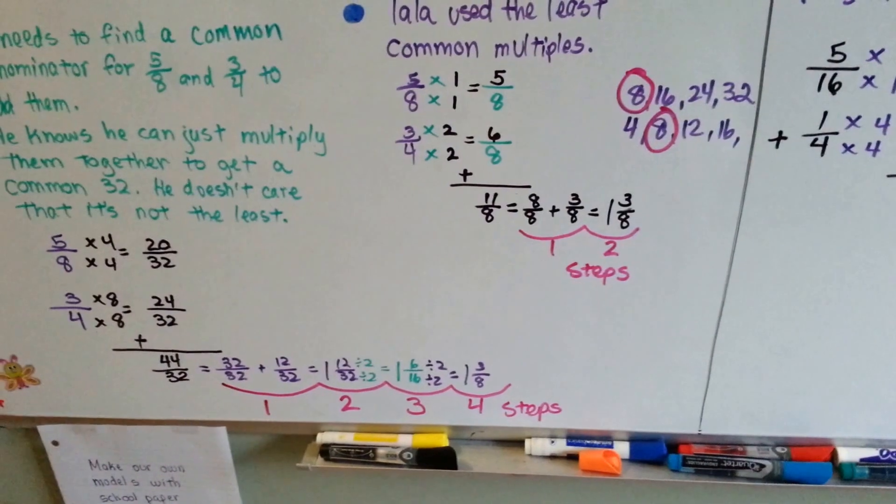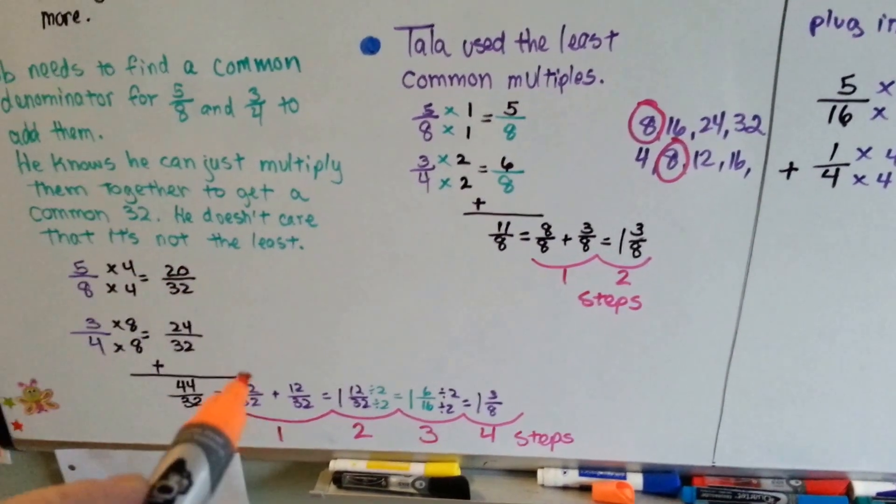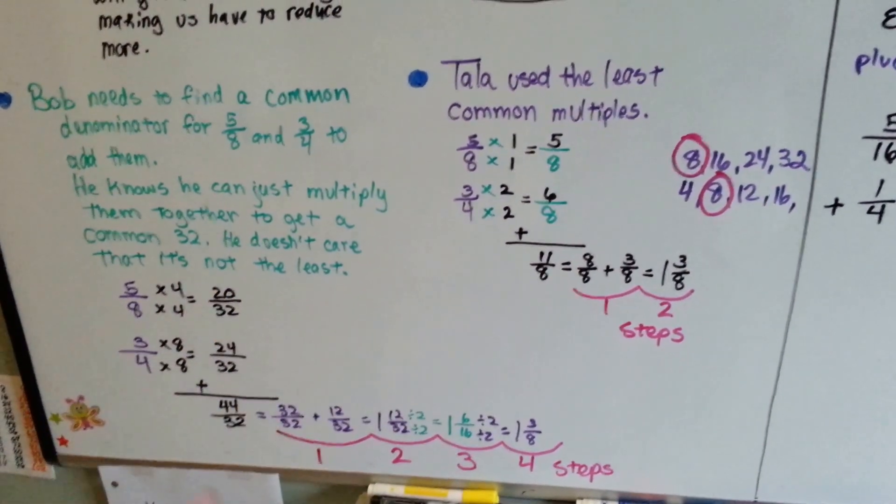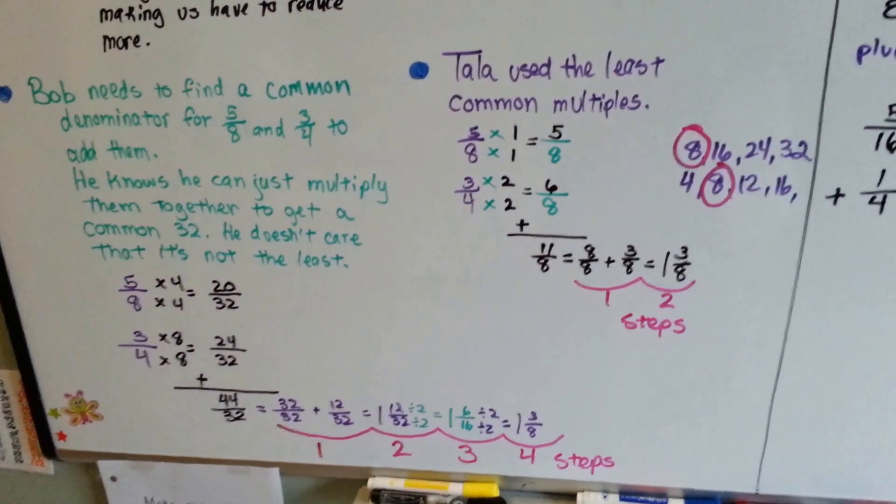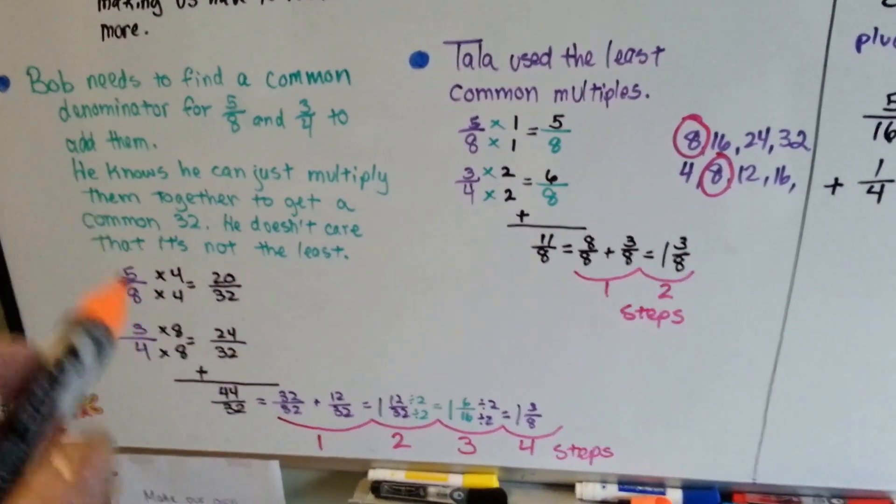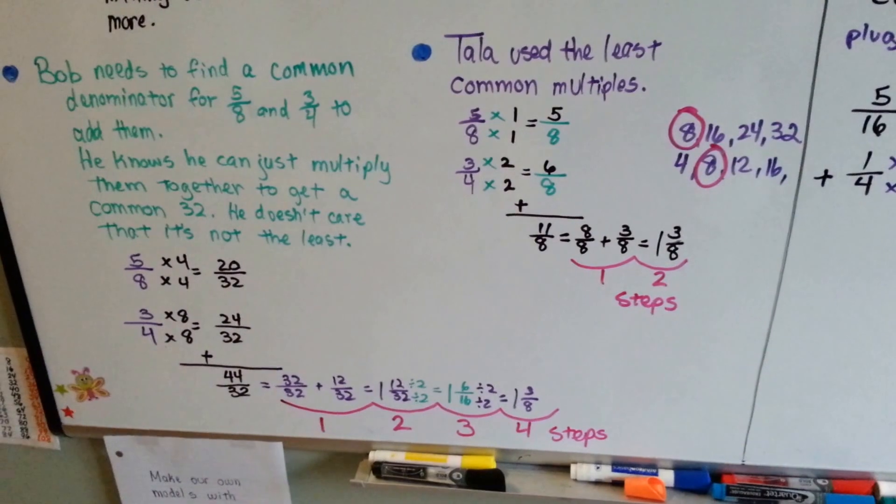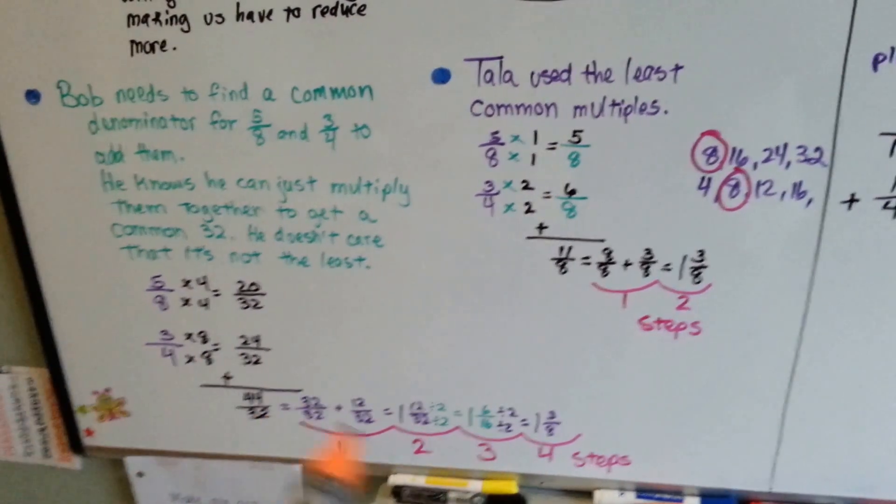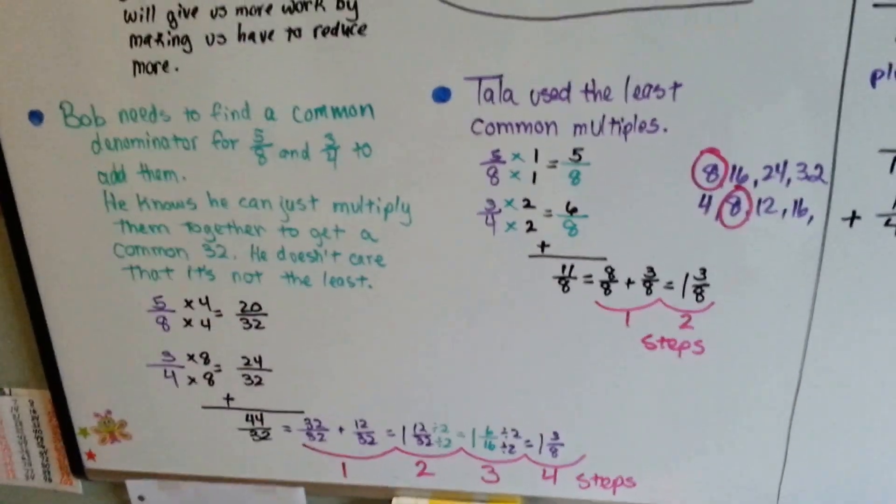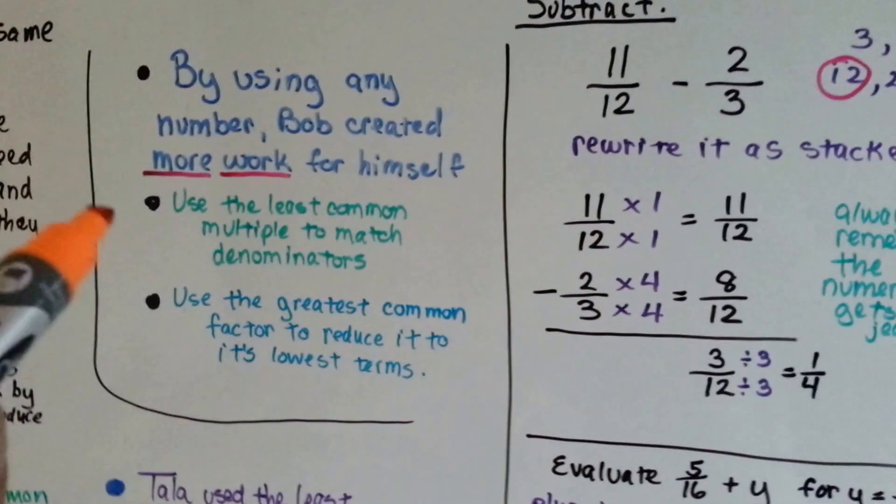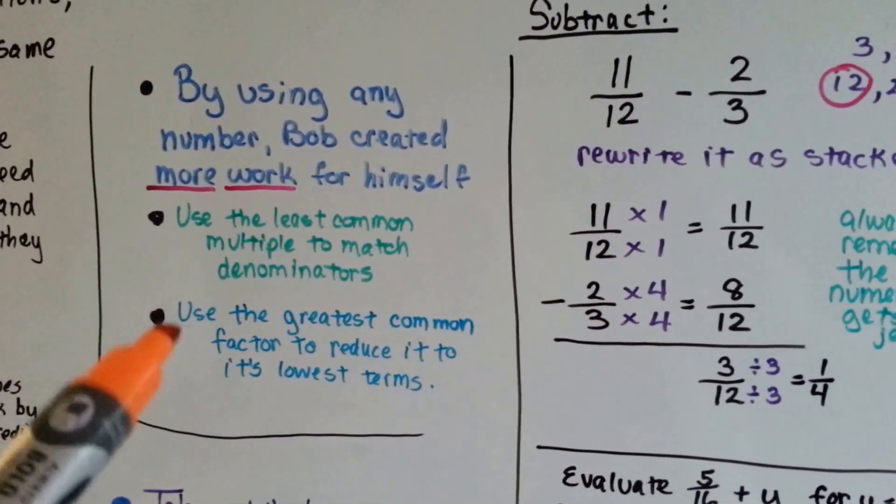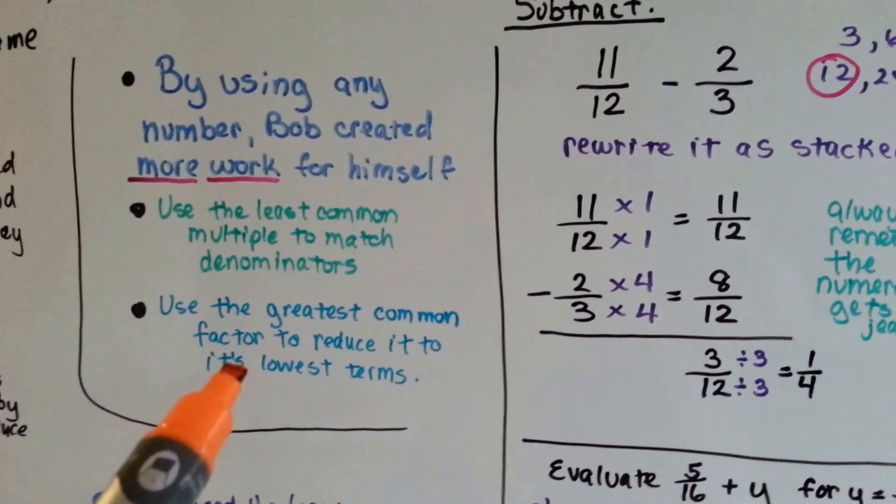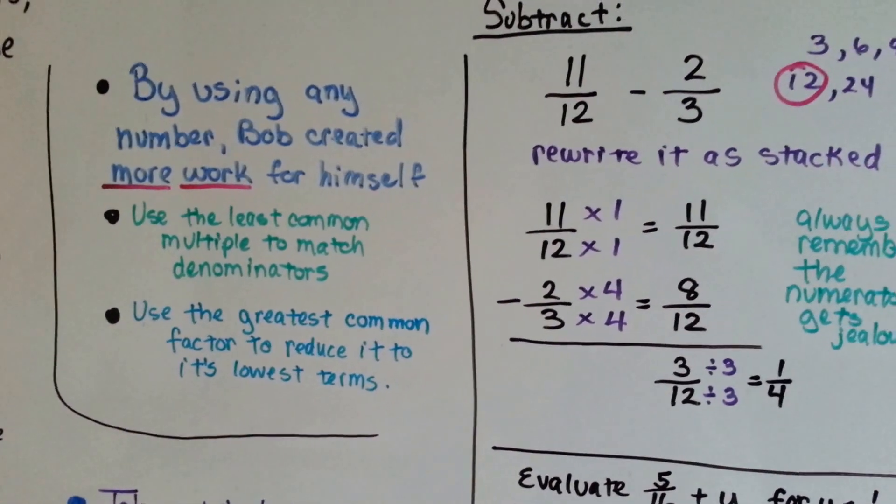So Bob, it took him 4 steps because he didn't use the least common multiple or the greatest common factor to find the common denominators. He just multiplied them together and said he's going to wing it, and then to reduce them he's just going to keep dividing them by 2. He could have saved himself a lot of trouble if he had done it Tala's way. I don't know, maybe he likes doing lots of math. Anyway, by using any number, Bob created more work for himself. You've got to use the least common multiple to match the denominators and then use the greatest common factor to reduce it to its lowest terms.